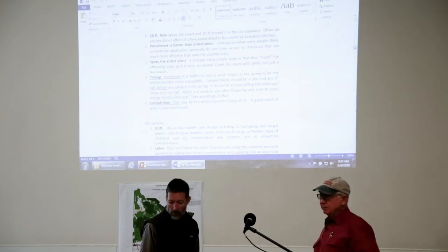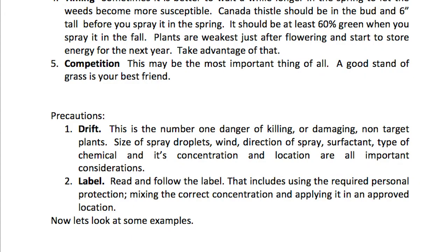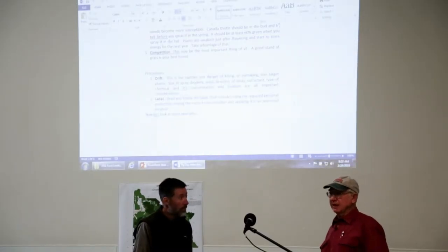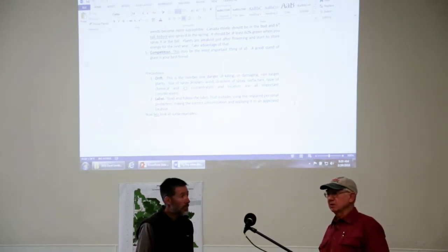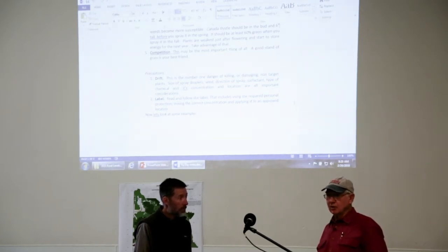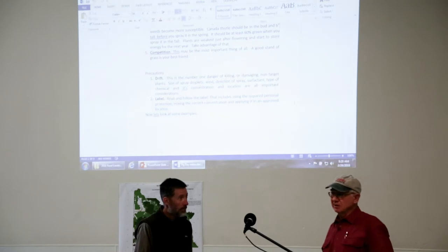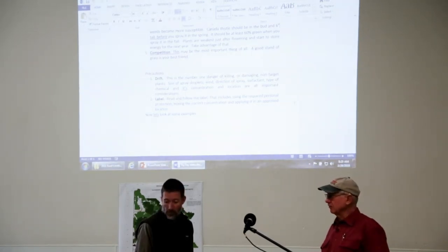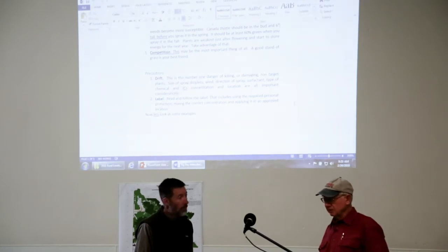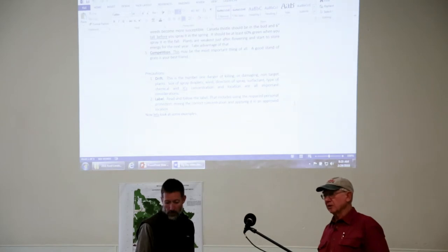Probably the most important thing is competition. Grass is your friend, and so is clover — anything that establishes plants and prevents infestations from coming in. You can think of it like aspen or cottonwood seeds: a very small percentage take hold, and if you've got your ground covered with a good cover that's not being disturbed, you've got your first line of defense against any kind of infestation. Then you can work on the existing infection.